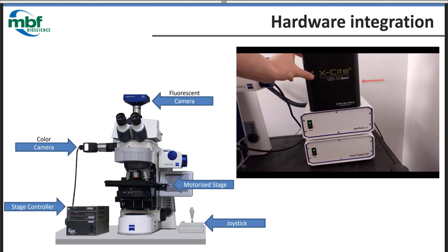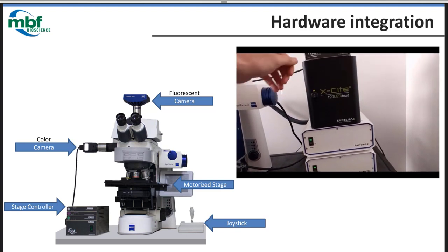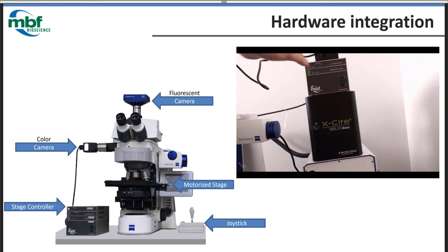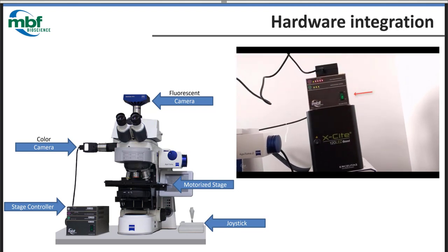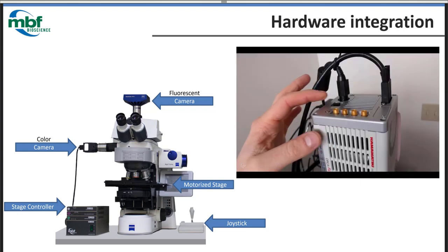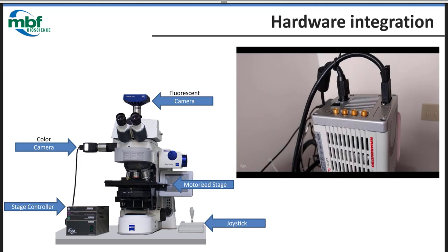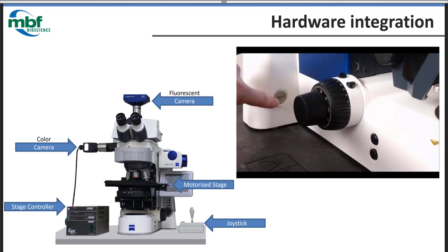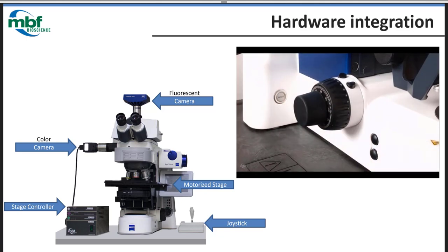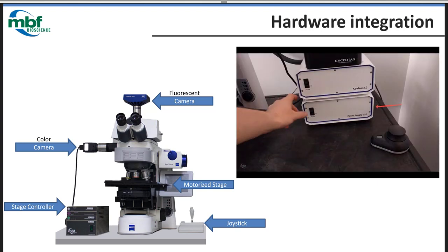We integrate with a microscope, and the software brings everything together and coordinates all the communications between pieces of hardware. We've got a motorized stage, which is critical for the systematic random sampling. We've got the stage controller and a joystick. This system is set up with two cameras for both brightfield and fluorescence imaging, and also an Apatome, a structured illumination device that provides confocal-like images.